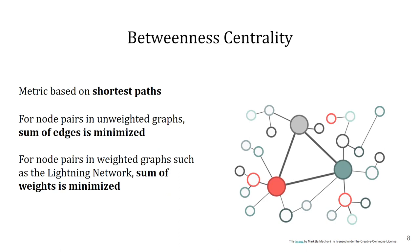Now we have almost everything we need to examine the centralization in the Lightning Network. To do so, we utilize a measure called betweenness centrality. In betweenness centrality, for each node pair in a connected unweighted graph, there exists at least one shortest path between these nodes such that the number of edges is minimized. For weighted graphs, such as the Lightning Network, where channel routing fees represent edge weights, the sum of the edge weights is minimized. The measure captures how much a given node is in between others, thus how central the node is and consequently how much information is flowing through it.